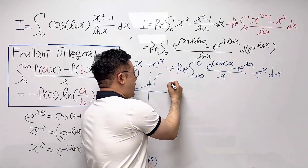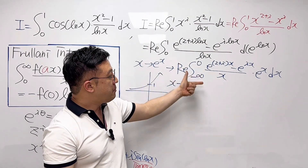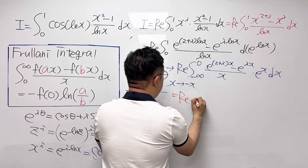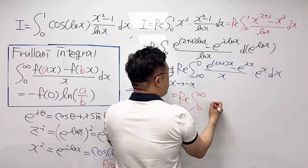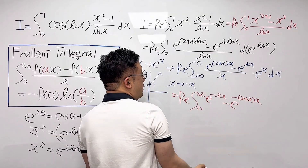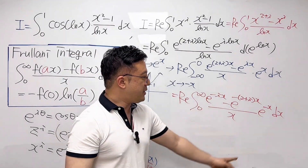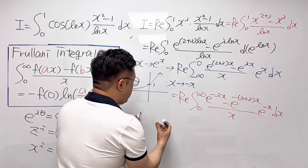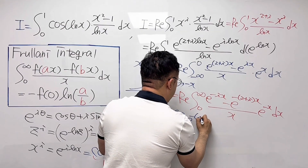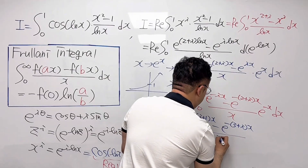Now I'll substitute x as negative x, turning negative infinity into positive infinity. Since the lower bound is infinity, we can switch the lower and upper bounds by multiplying a negative sign to the integrand. So we get the real part of the integral from 0 to infinity of [e^(−ix) minus e^(−(2+i)x)] over x times e^(−x) dx. Multiplying e^(−x) into the numerator terms gives the real part of the integral from 0 to infinity of [e^(−(i+1)x) minus e^(−(3+i)x)] over x, dx.